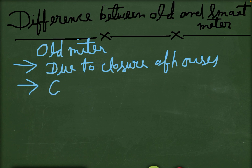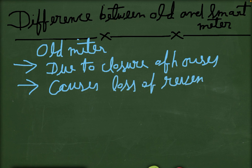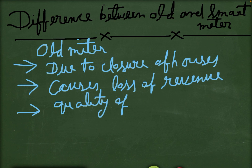The second point is that this causes a loss of revenue. The third point is that we don't know about the quality of power in the case of the old meter. The fourth problem is that there is one-way communication in the old meter.